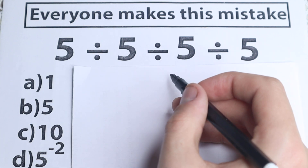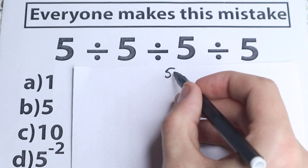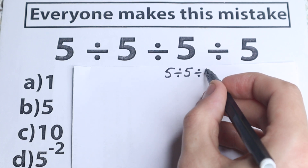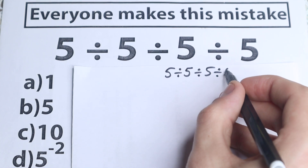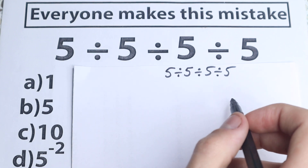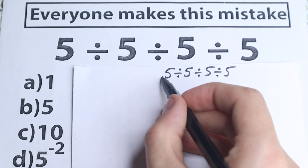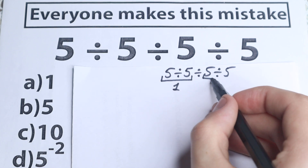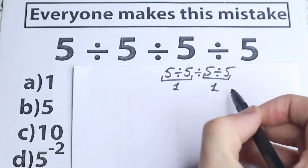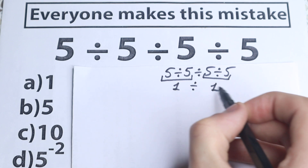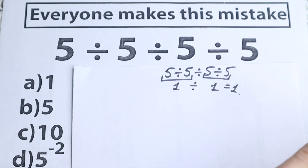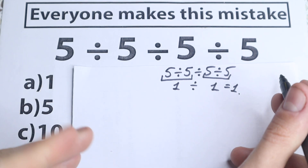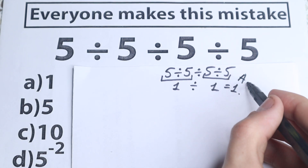What is the first way a lot of students solve it? So 5 divided by 5 — they read this problem as 5 divided by 5, divided by 5, and divided by 5. A lot of students do it like this: 5 divided by 5 equals 1, and on the right-hand side 5 divided by 5 equals 1 as well, then 1 divided by 1 equals 1. That gives option A. I'm not going to say yet whether this is correct or incorrect.